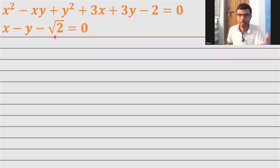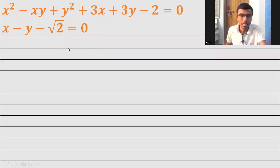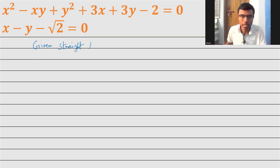That's my only job. The curve and the straight line, I've kept them on every slide so that you can refer to them at any point of time. Now let's get started. The given straight line is x minus y minus root 2 is equal to 0.